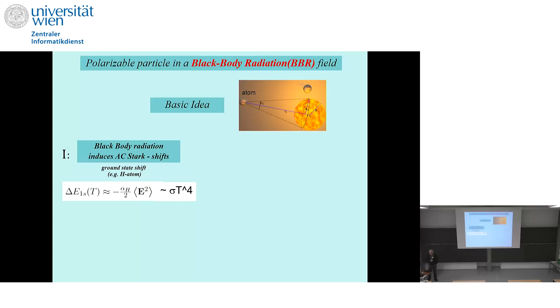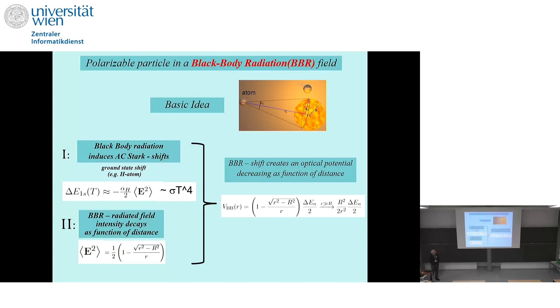Black body radiation induces a stark shift, and the dominant term is proportional to the local intensity, which is roughly proportional to the fourth power of temperature. Around the hot sphere, the black body radiation is a radiated field, a propagating field outward, so the intensity has to decay as a function of distance, roughly as 1 over r squared. If we put these two things together, we get a potential. The shift of an atom can be seen as an optical potential, and we get a space-dependent optical potential which roughly is a 1 over r squared potential times the shift of the state that the atom is in.